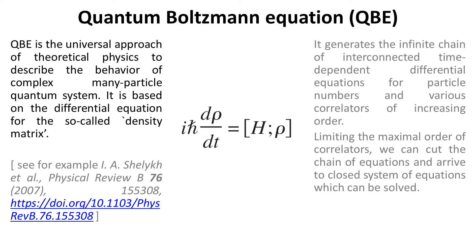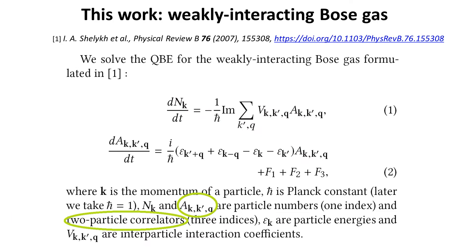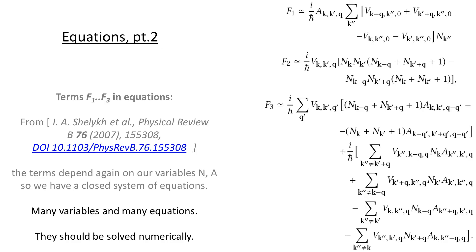In this work we simulate the so-called weakly interacting Bose gas. Here we see the quantum Boltzmann equation formulated for this problem. N is the occupation, while A is the two-particle correlator. The right part of the equations depends again on N and A, so this is a closed system of equations depending only on its variables and coefficients of the interaction model. Here we see formulas for the terms F1, F2, F3. What we should say, however, is that there are too many variables and too many equations.